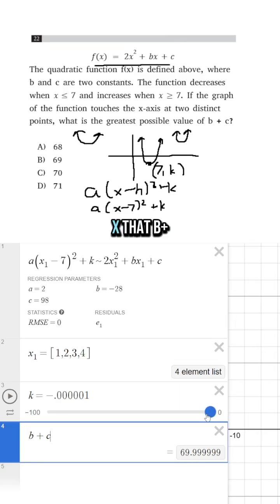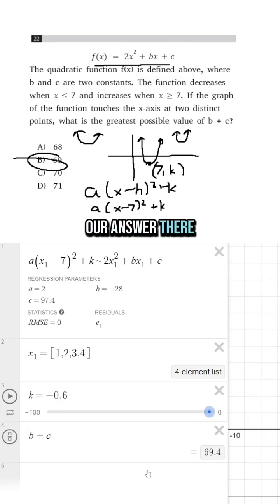So what's the first number that b plus c can be if k has to be less than 0? It has to be 69. So our answer there is b.